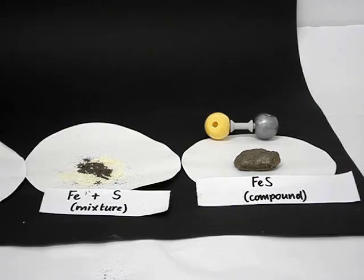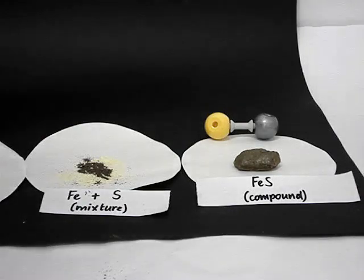Now, how does the iron sulfide compound compare with the iron and sulfur mixture? Let's check if we can now separate the iron in there from the sulfur. We take a magnet and see if we can do what we did before.